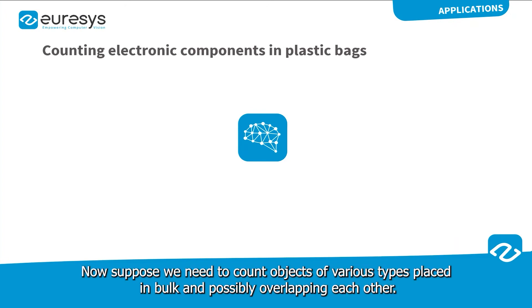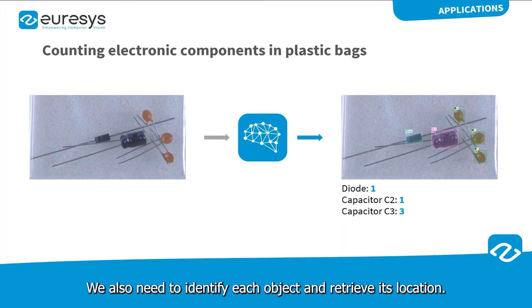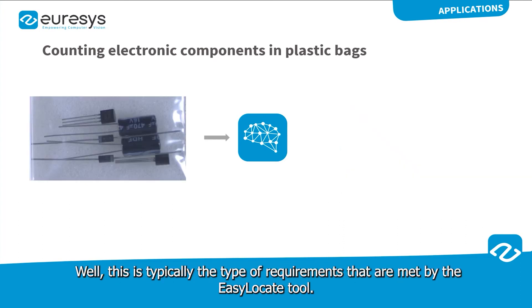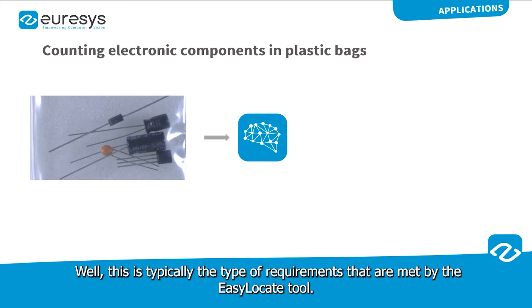Now, suppose we need to count objects of various types placed in bulk and possibly overlapping each other. We also need to identify each object and retrieve its location. Well, this is typically the type of requirements that are met by the EasyLocate tool.